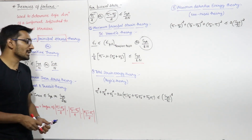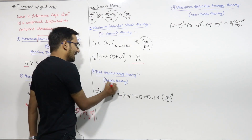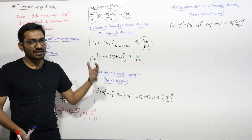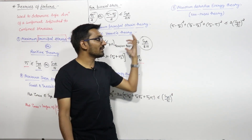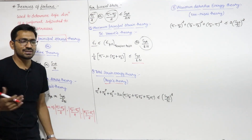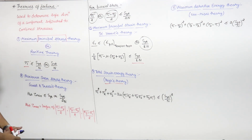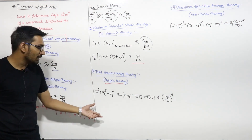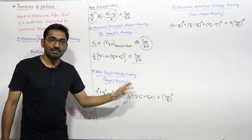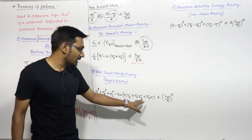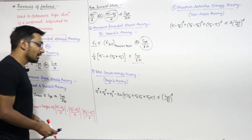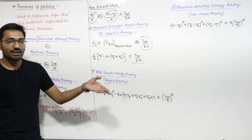The fourth theory is the total strain energy theory, also known as Haigh's theory. The formula is: sigma 1² + sigma 2² + sigma 3² − 2μ(sigma 1·sigma 2 + sigma 2·sigma 3 + sigma 3·sigma 1) should be less than or equal to (SYT/N)². For a biaxial state, set sigma 3 to 0 to get the simplified formula. For GATE, theories of failure are straightforward — you put in the direct values and get the answer.